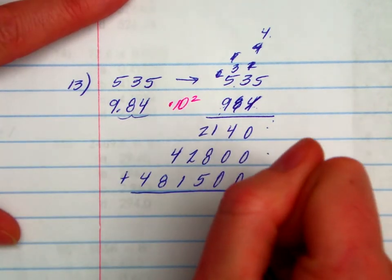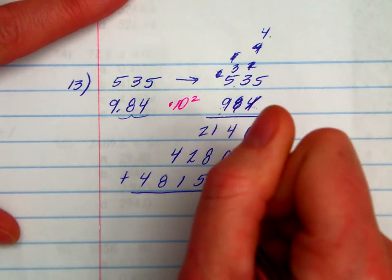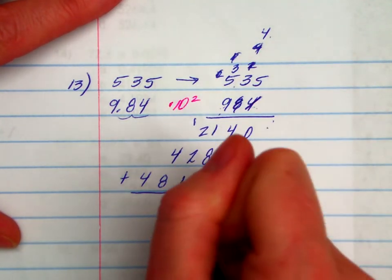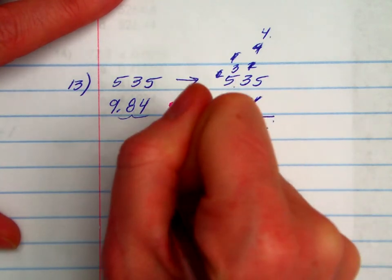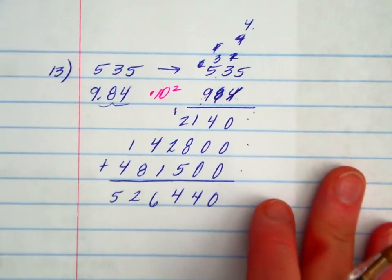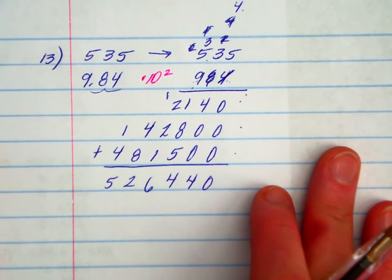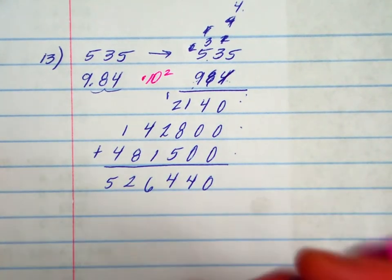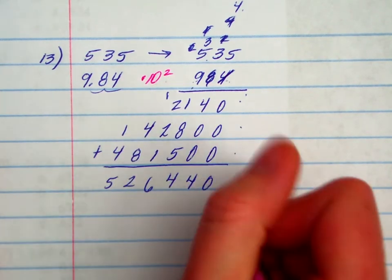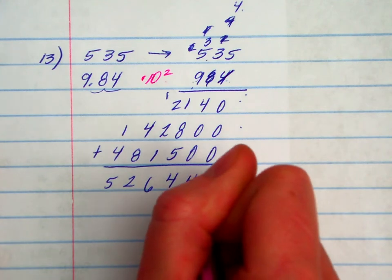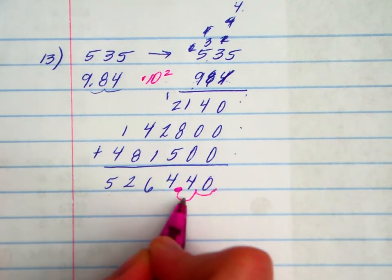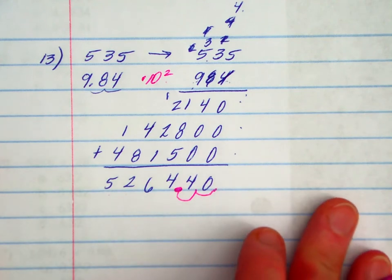Now you add. We need to get the decimal into the right home. Before we multiply by 10 to the second power. Now we need to divide by 10 to the second power. 10 to the first, 10 to the second.